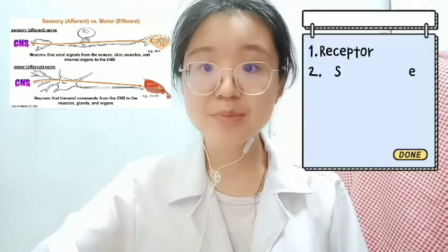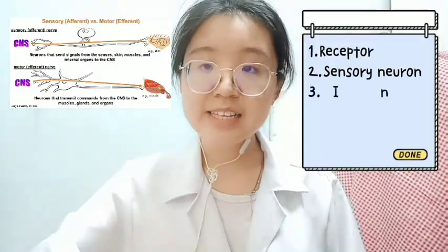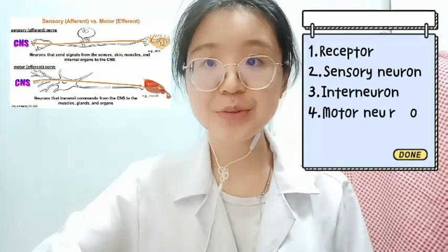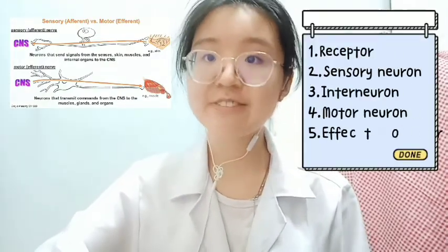There are five components, which are receptor, sensory neuron, interneuron, motor neuron, and the last is effector.